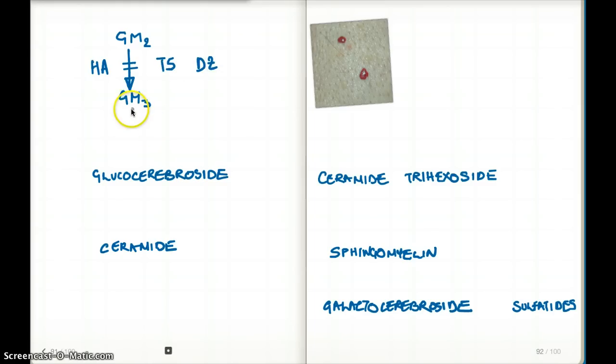GM2 later becomes glucocerebroside. This pathway is not so important clinically. Moving down, glucocerebroside can become ceramide using the enzyme glucocerebrosidase. When this pathway is inhibited, we have Gaucher disease.